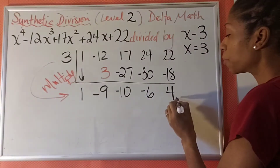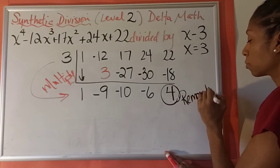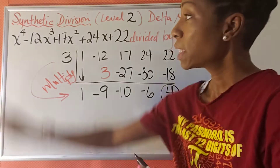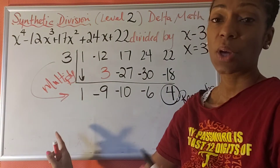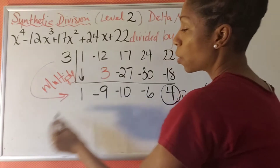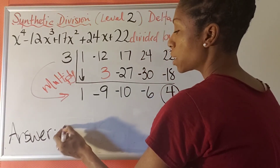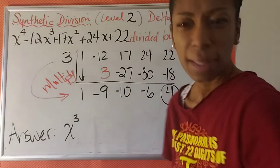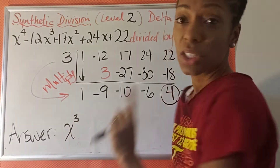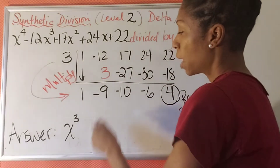So now this last number is always our remainder. But these are the coefficients of our answer. Since our highest exponent is 4, our answer will start with 1 less — our highest exponent will be 3. So our answer is 1x cubed, but we're not going to write the 1 because it's not necessary. We start with x cubed. And then minus 9.